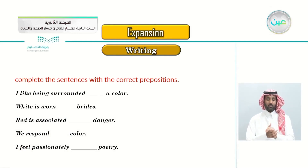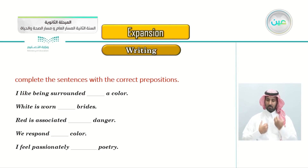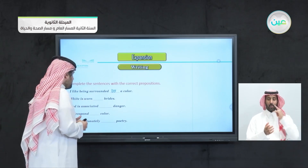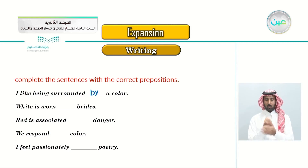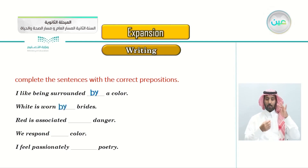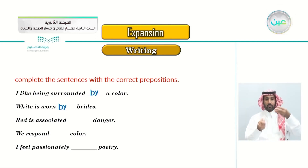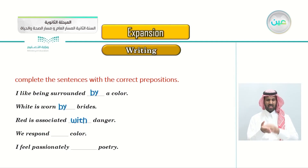Here's a little exercise about the prepositions: complete the sentences with the correct preposition. 'I like being surrounded ___ color' - surrounded by. 'White is worn ___ brides' - worn by brides. 'Red is associated ___ danger' - associated with. The answers are: surrounded by, worn by, associated with.